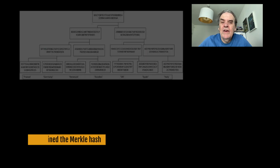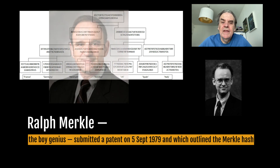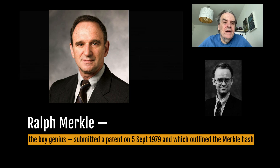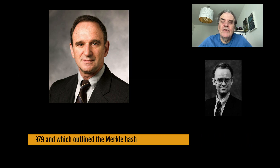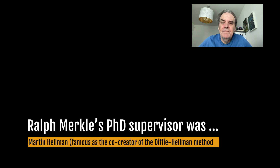Ralph Merkle, the boy genius, submitted a patent on the 5th of September 1979 which outlined the Merkle hash tree. This is used to create a block hash in blockchain. Ralph Merkle's PhD supervisor was Marty Hellman, famous for the co-creation of the Diffie-Hellman method.